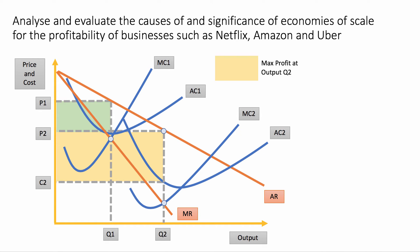Netflix is scaling up production, moving from a set of cost curves MC1 and AC1 to a much bigger scale of production shown by cost curves MC2 and AC2. The unit cost of production is going down. Assuming a given level of demand — and we know demand has been increasing anyway for Netflix — even given the same demand conditions shown by the AR and MR curves, the profit-maximising equilibrium goes up from Q1 to Q2, and we can show that total profit increases from the green area at price P1 to the yellow area at price P2. So even though Netflix might be charging less per unit, if there's a significant cost reduction from economies of scale, total profits can go up.